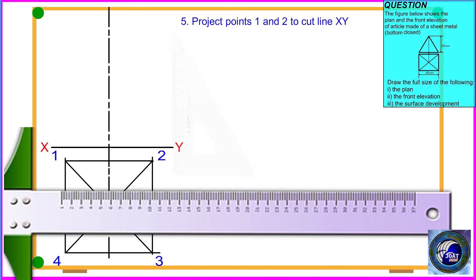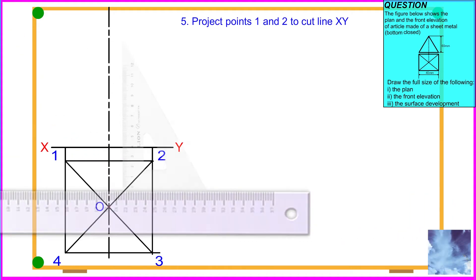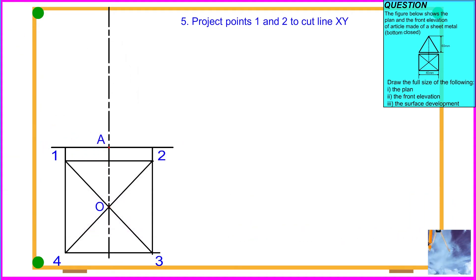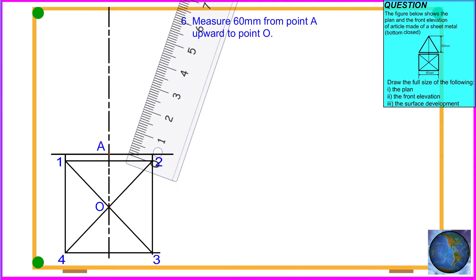Procedure 5: Project points 1 and 2 to cut line XY. Procedure 6: Measure 60 millimeters from point A upwards to point O.